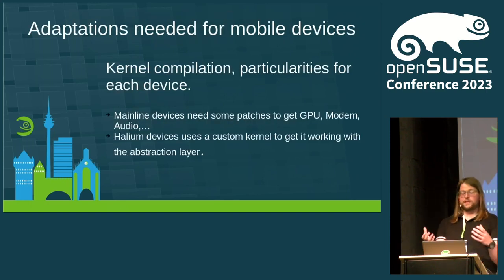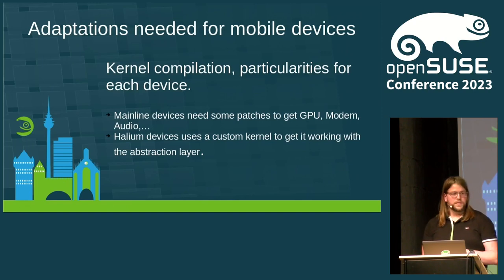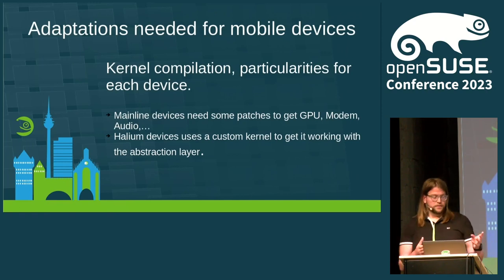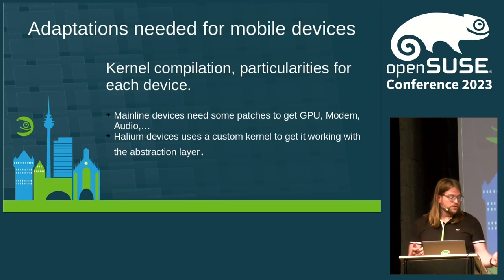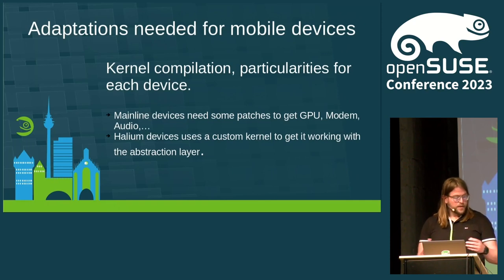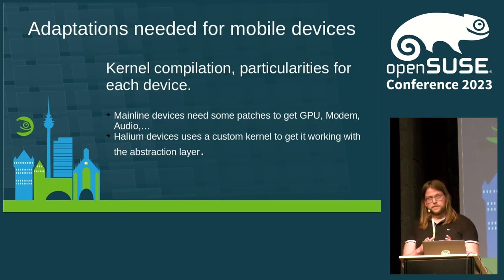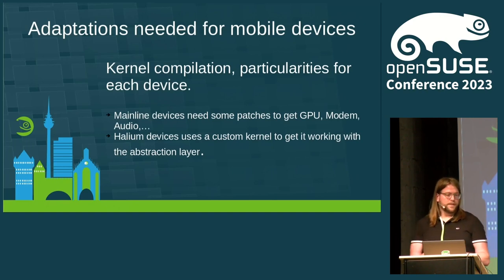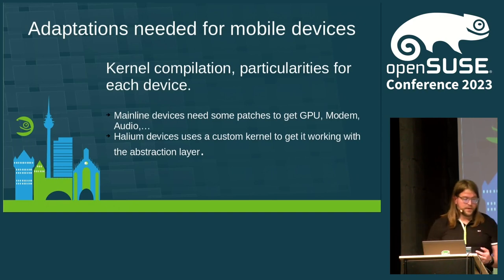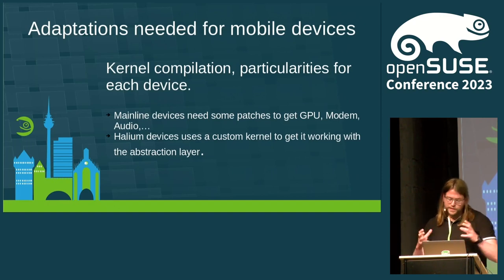We have to make a lot of changes to the image. One of them is the kernel. The OpenSUSE full kernel doesn't work on these phones — it needs a lot of patches. The problem is that you can run the OpenSUSE full kernel, but it doesn't work with the modem, the GPU, or the audio. So you need a lot of things to make it work.